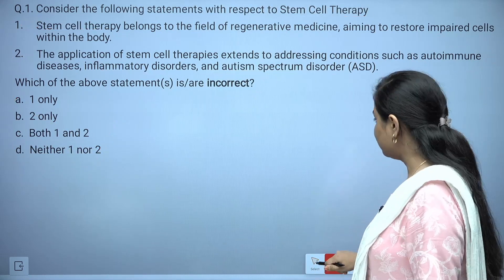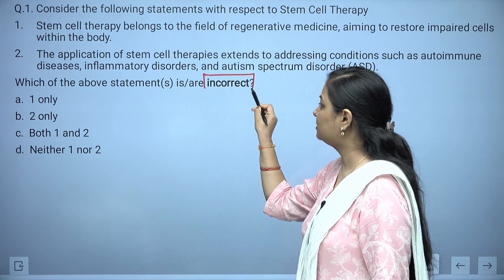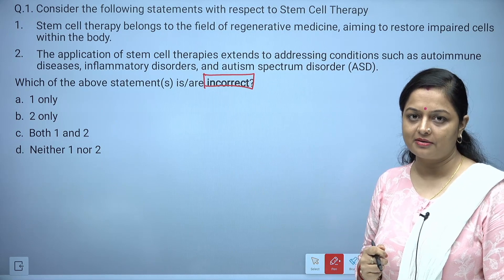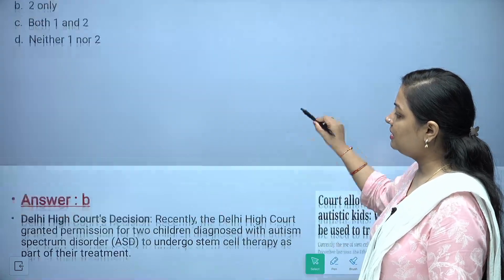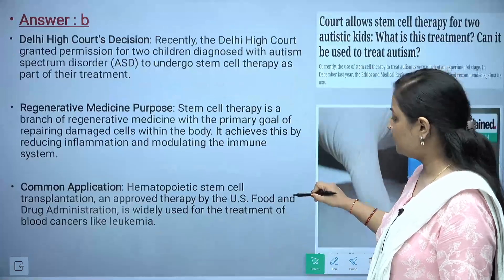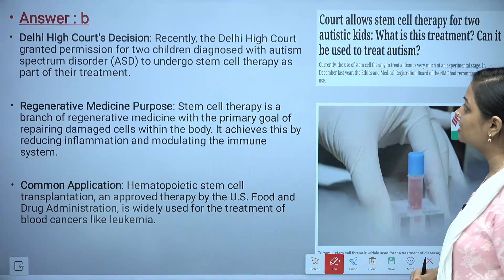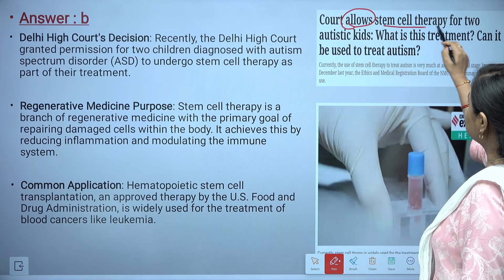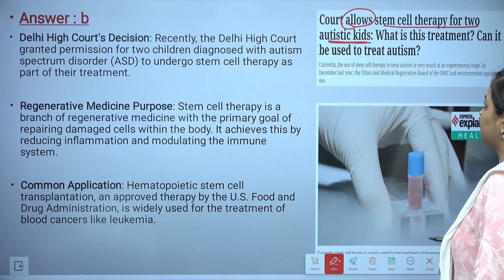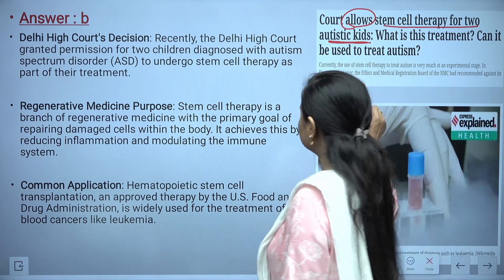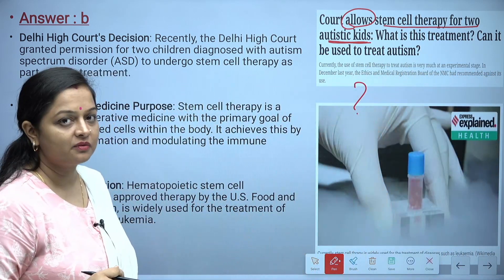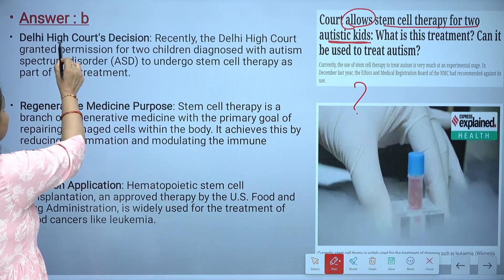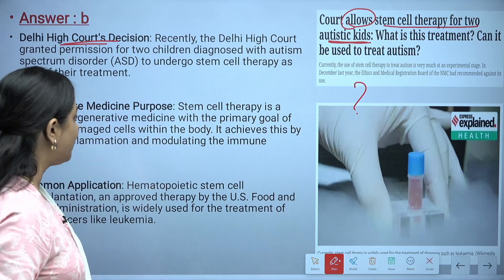Please always keep in mind whether they are asking for correct or incorrect options. The answer is option B — the second statement is incorrect. This was in the news because recently the Delhi High Court allowed stem cell therapy for two autistic kids. The details of this treatment were explained in the Indian Express health section.